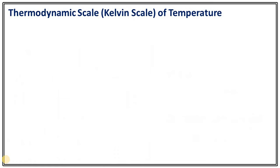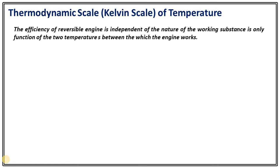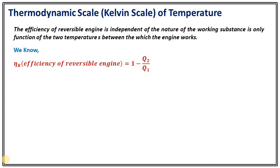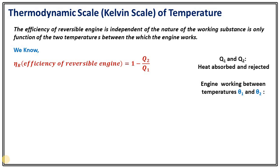Now moving on to the second topic: the thermodynamic scale, also known as the Kelvin scale of temperature. From our previous lecture on heat engines, the efficiency of a reversible engine is independent of the nature of the working substance and is only a function of the two temperatures between which the engine works. So η_R equals 1 minus Q2 upon Q1, and since efficiency is just a function of two temperatures, η_R is a function of θ1 and θ2.